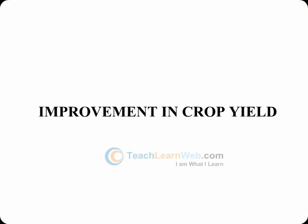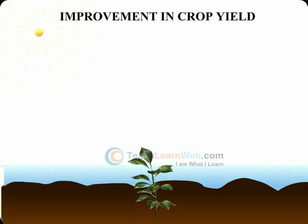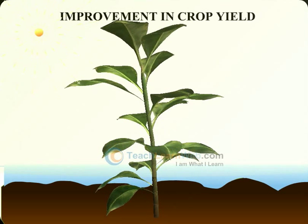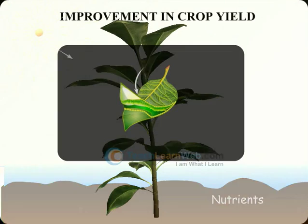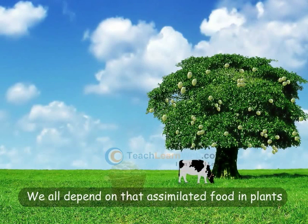Improvement in crop yield. Growth of plants depends on sunlight, availability of water and other nutrients. Plants synthesize their own food by the process of photosynthesis and we all depend on that assimilated food in plants.